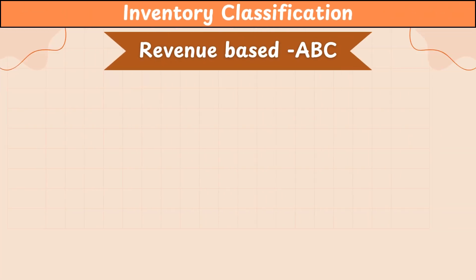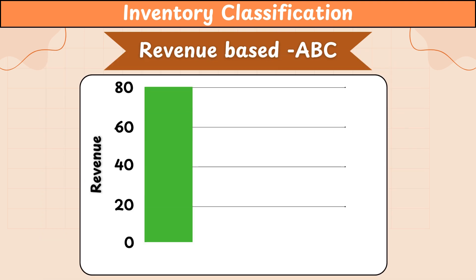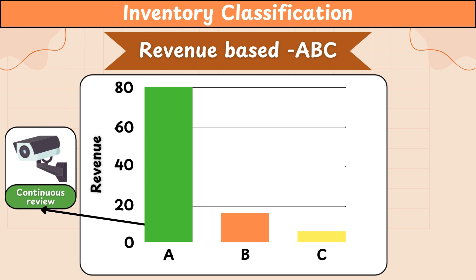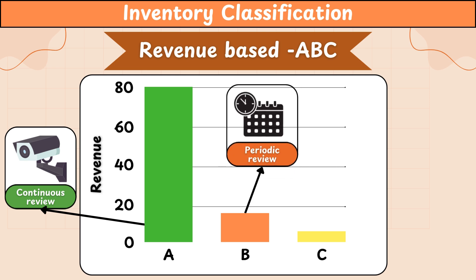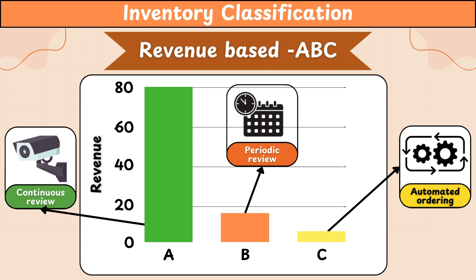Classification based on revenue generated is ABC classification. SKUs that contribute to 80% of total revenue are classified as A items. Those contributing to 15% of total revenue are classified as B items, and those contributing to the remaining 5% are classified as C items. Keep in mind that these percentages are just guidelines and can be altered. For inventory management, A items are monitored continuously even if that increases cost, to avoid stockouts. B items can be reviewed periodically, balancing oversight and cost. For C items, simpler approaches like automated reorder policies are used to limit management cost.